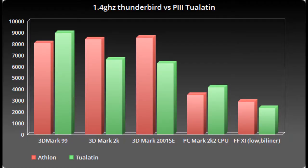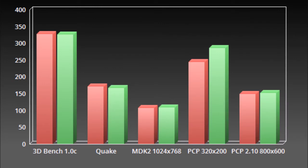Let's start with the synthetic benchmarks. In 3DMark 99, the Tualatin does noticeably better than the Athlon. We have the opposite in 3DMark 2000 and 2001 SE, where the Athlon takes a very noticeable lead. It flips back with PCMark 2002's CPU benchmark, where the Tualatin is ahead again. Then in the Final Fantasy XI benchmark — set to low resolution and bilinear filtering — the Athlon pulls ahead a little bit. The numbers on the game benchmarks are significantly lower than the synthetic ones that typically run in the thousands.